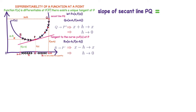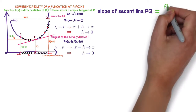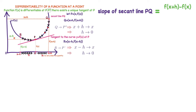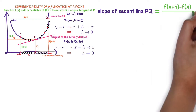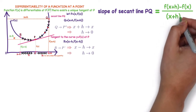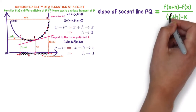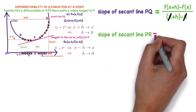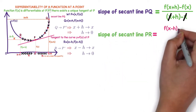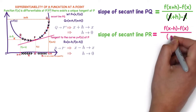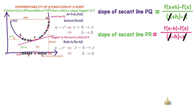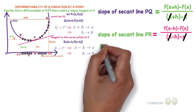You know the slope formula: (y2 − y1) / (x2 − x1). Observing the points p and q, the slope of secant line pq is [f(x+h) − f(x)] / [(x+h) − x], and the x's cancel. Similarly, the slope of secant line pr, using points p and r, is [f(x−h) − f(x)] / [(x−h) − x], and again the x's cancel.